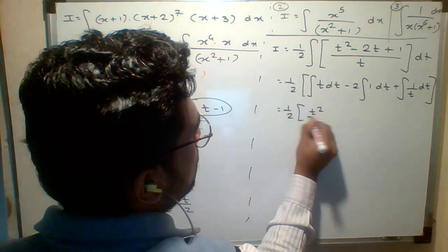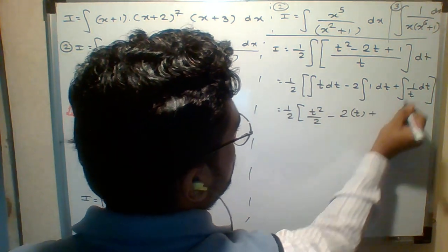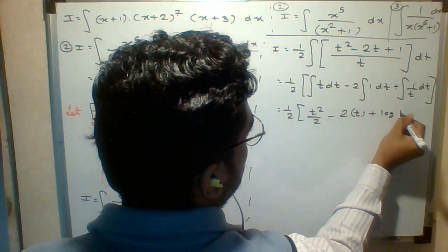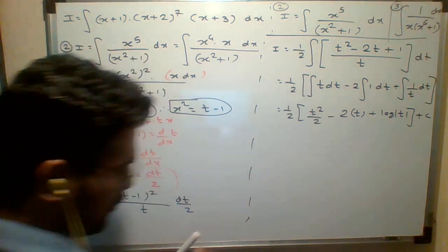What is integration of t? t squared by 2. What is integration of 1? t. What is 1 upon t? Log t. This is the integration. And then write plus C.